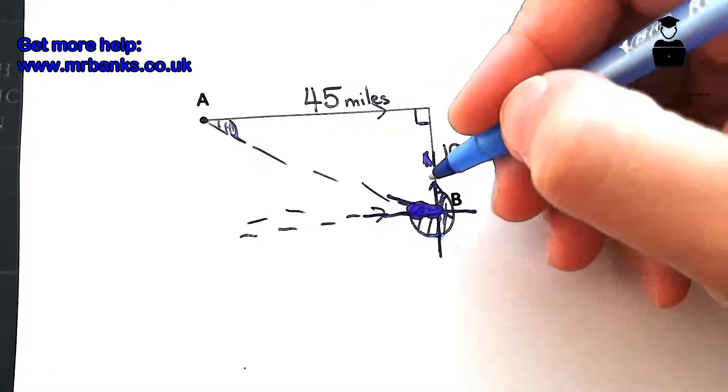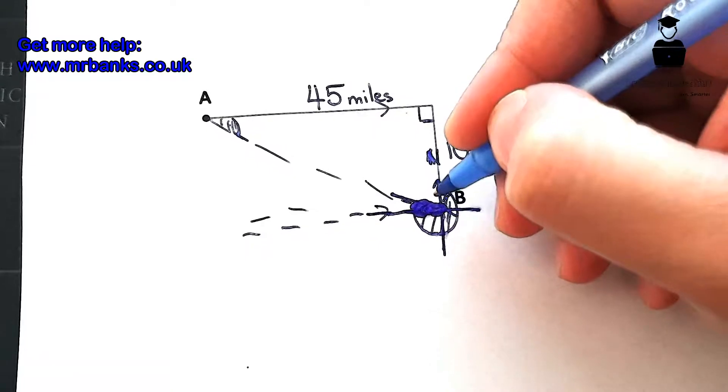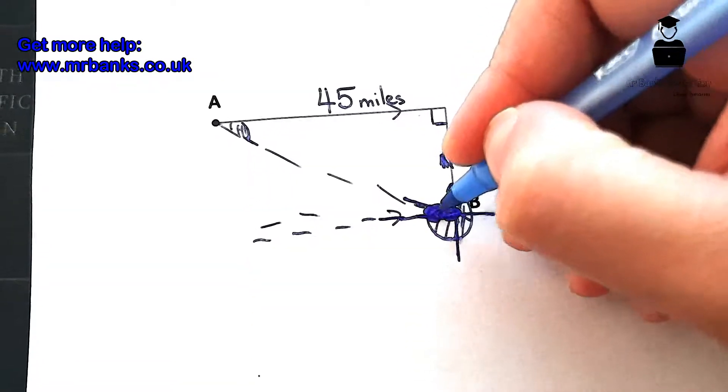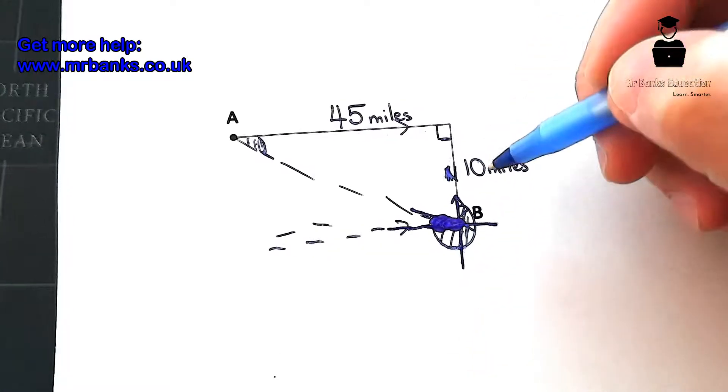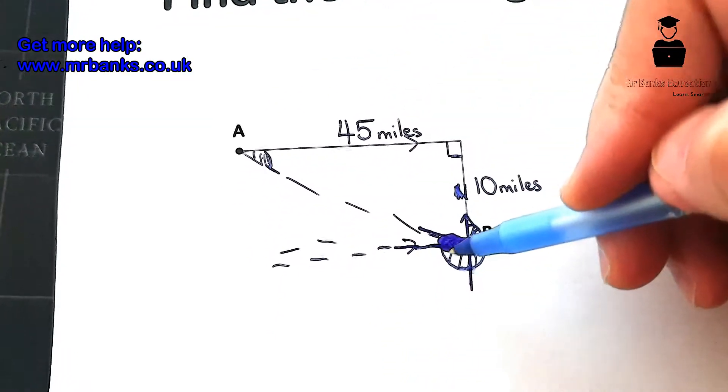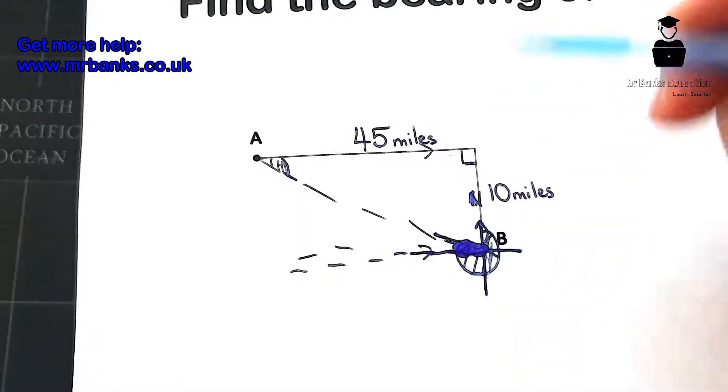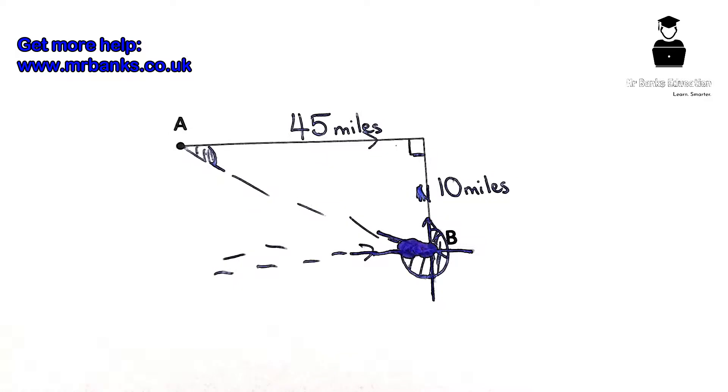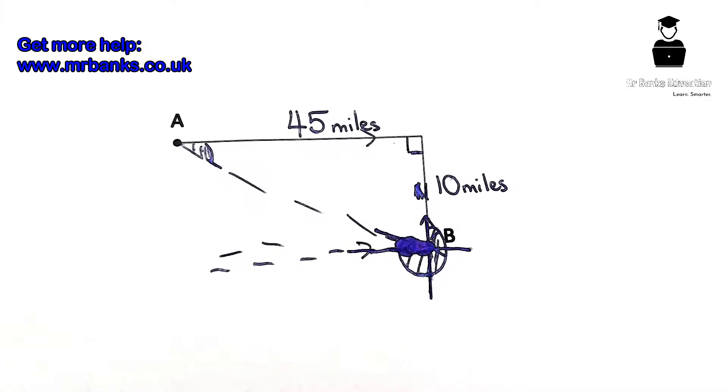Or if you want to, we can work out this one here and then subtract it from 90, and then we'll find that angle. I think it's easier in this case to do this and then see that's just an alternate angle.